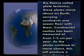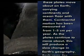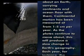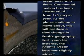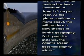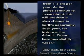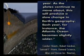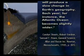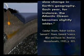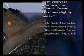Continental motion has been measured at from one to five centimeters per year. As the plates continue to move about, this will produce a slow change in earth's geography. Each year, for instance, the Atlantic Ocean becomes slightly wider.